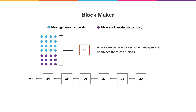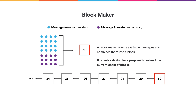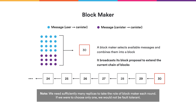A replica on the subnet can serve as the block maker. It will have some messages available that should be processed by the canisters on this subnet. It might have a blockchain up to a certain height — let's say 29 — and now it gathers messages waiting to be processed, groups them into a block, and proposes an extension to the blockchain by sending it on the gossip network to the other replicas.